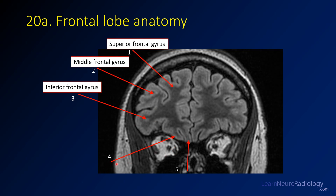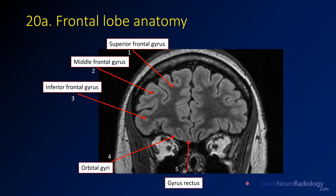Two labeled structures here. This one I've labeled a bit generically — this is the orbital gyri; in this case, this is the medial orbital gyri, but we'll talk about that a little bit more in just a second. And this final one is the gyrus rectus.